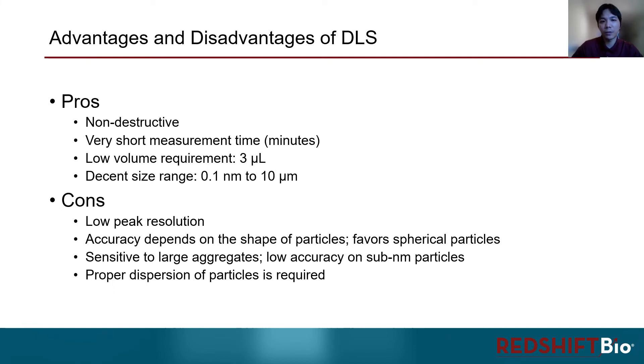Some of the disadvantages include low resolution. Particles that are only a few nanometers apart usually cannot be distinguished by DLS. DLS treats all particles to be spherical in shape. So if the particles are not spherical, the accuracy might not be guaranteed. Also, DLS is more sensitive to larger particles, such as aggregates or dust, and less accurate for smaller particles. And finally, particles need to be in homogeneous dispersion for the measurement.